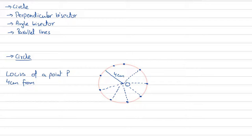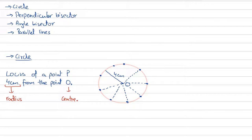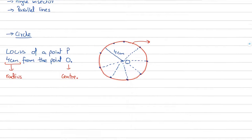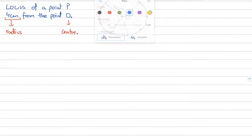If the question says construct the locus of a point P that is 4 centimeters from point O, what we do is make a circle with O as the center and 4 centimeters as the radius. All points lying on the circumference will be 4 centimeters from O.